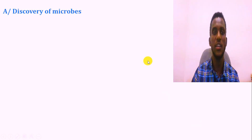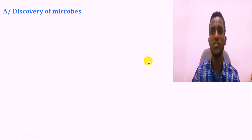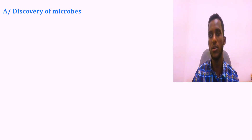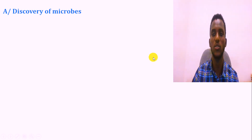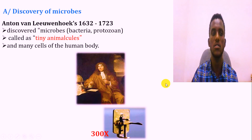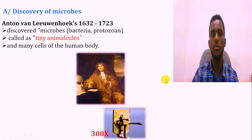Regarding the discovery of microorganisms or microbes, which marks the beginning of the history of microbiology, the first person to discover microorganisms was Antonie van Leeuwenhoek. He is a scientist who observed bacteria, and also protozoa.